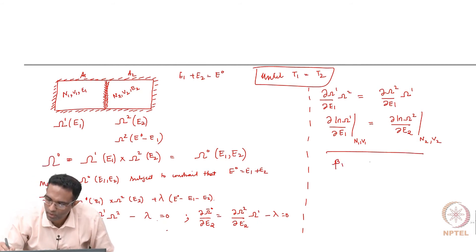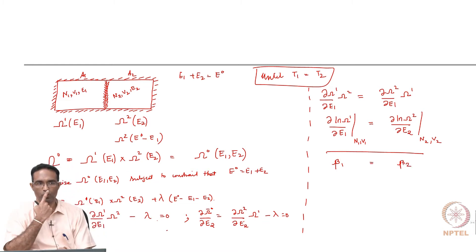But the condition for you to find that E1 bar and E2 bar is this. We call this beta 1 and this as beta 2. We are just calling it by different names, beta 1 and beta 2.